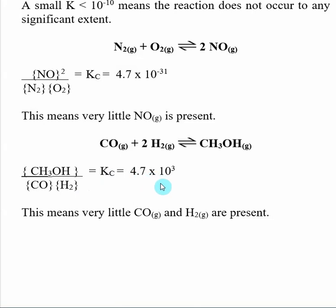K is relatively large, 4.7 times 10 to the 3rd. That means that the concentration of CH3OH is large compared to the concentration of CO and H2.